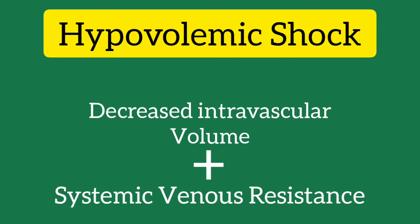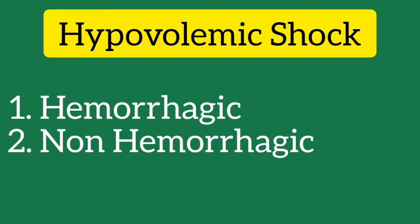Hypovolemic shock divides into two broad subtypes: hemorrhagic and non-hemorrhagic. Common causes of hemorrhagic hypovolemic shock include GI bleed such as variceal bleed, portal hypertensive gastropathy bleed, peptic ulcer, and diverticulosis. Vascular etiologies include aortoenteric fistula, ruptured abdominal aortic aneurysm, tumor eroding into a major blood vessel, or spontaneous bleeding in the setting of anticoagulant use.